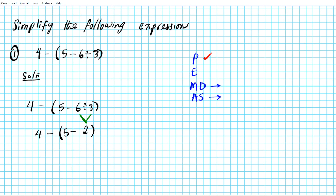We're going to do that next. We have 4 minus — and 5 minus 2 in the parenthesis. When you subtract 5 minus 2 you get 3. Now since the expression in the parenthesis has been simplified completely, we do not need to keep the parenthesis — it's gone. We simply subtract: 4 minus 3 is equal to 1. That is your final answer.